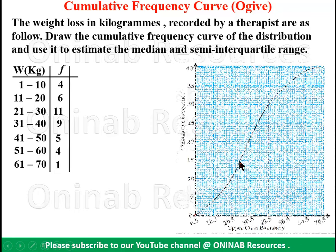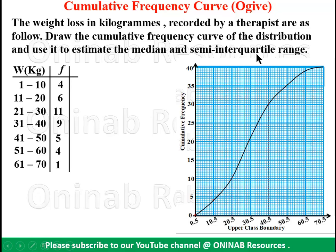We need to draw a cumulative frequency curve. It is plotted as upper class boundary against cumulative frequency — meaning the horizontal axis is the upper class boundary, while the vertical axis is the cumulative frequency. So we need two additional columns added to our table: the upper class boundary and the cumulative frequency column.